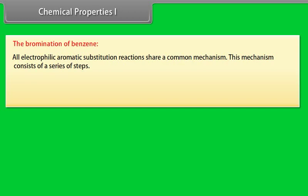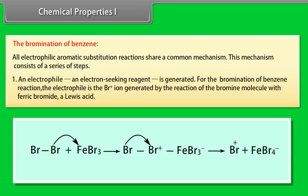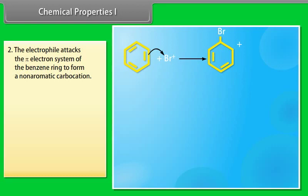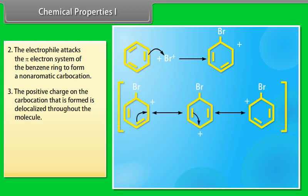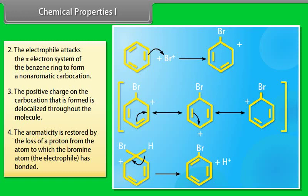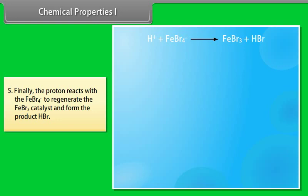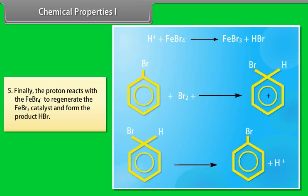The bromination of benzene. All electrophilic aromatic substitution reactions share a common mechanism. This mechanism consists of a series of steps. An electrophile, an electron seeking reagent, is generated. For the bromination of benzene reaction, the electrophile is the Br plus ion generated by the reaction of the bromine molecule with ferric bromide, a Lewis acid. The electrophile attacks the pi electron system of the benzene ring to form a non-aromatic carbocation. The positive charge on the carbocation that is formed is delocalized throughout the molecule. The aromaticity is restored by the loss of a proton from the atom to which the bromine atom, the electrophile, has bonded. Finally, the proton reacts with the FeBr4 minus to regenerate the FeBr3 catalyst and form the product HBr. You can summarize this particular electrophilic aromatic substitution mechanism like this.